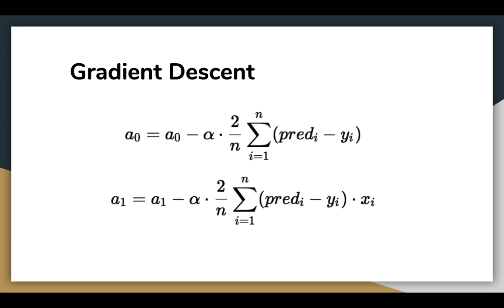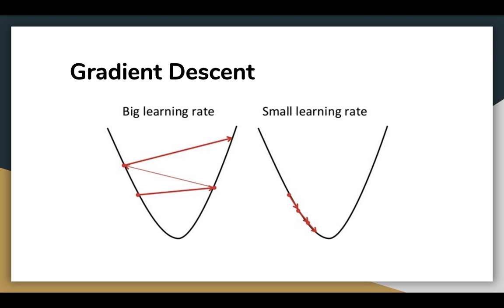Alpha is the learning rate here, which is a hyperparameter that you must specify. A small learning rate could get you closer to the minima but takes more time to reach the minima. A larger learning rate converges sooner but there is a chance that you could overshoot the minima. This can be depicted on the slide.